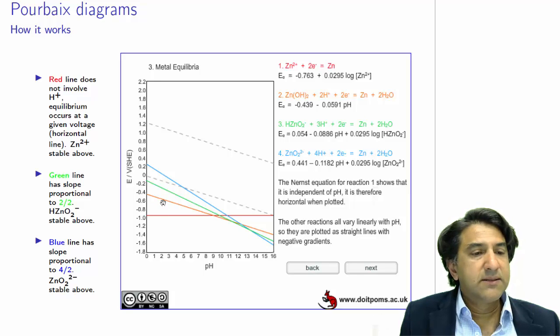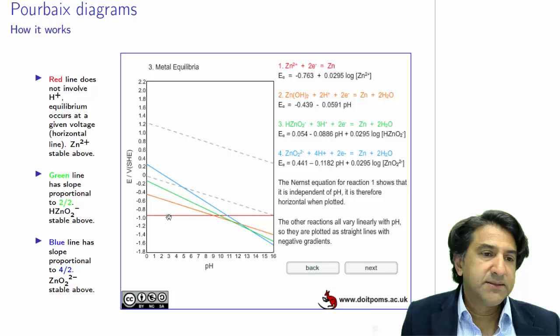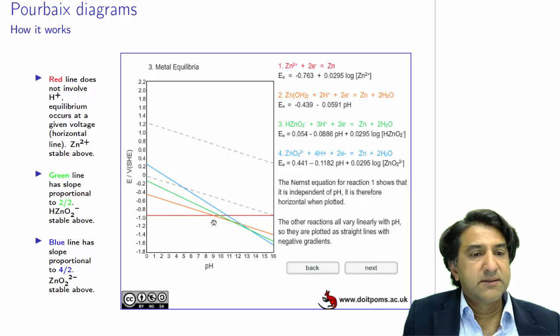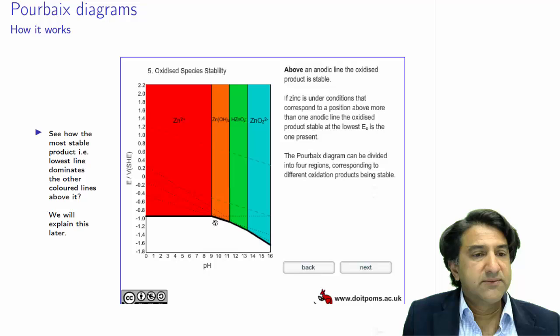And certainly above the orange ZnOH2 is stable, but below the orange it says that zinc is stable. But on the other hand, the red line says that Zn2+ is stable. So if we connect, we'll see later that if we combine this reaction with this one, it turns out that Zn2+ will be stable for all of these lines.